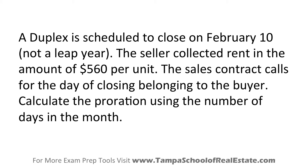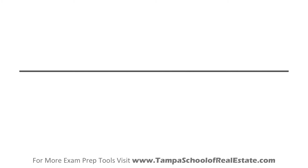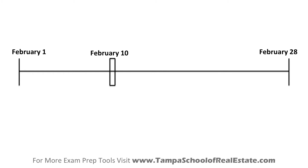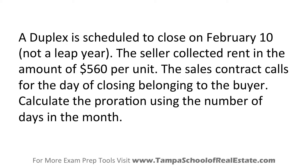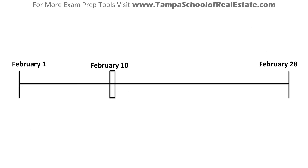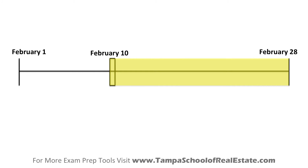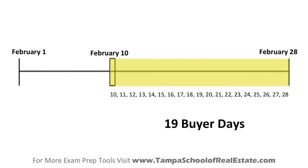We'll first figure out how many days belong to each the buyer and the seller. The problem states that the closing date is on February 10th and that it is not currently a leap year, so we know that this month will only have 28 days. Let's plot these dates on a number line, using the far left as February 1st and the far right as February 28th. We can plot our day of closing which is February 10th, and the question states that the day of closing belongs to the buyer. So on the number line, February 10th to February 28th including February 10th belongs to the buyer. If we count out these days we end up with a total of 19 days belonging to the buyer.